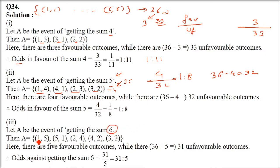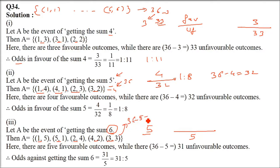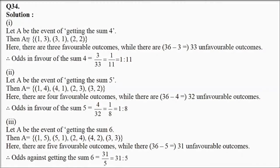For odds against getting sum 6: the combinations (1,5), (5,1), (2,4), (4,2), (3,3) give you 6 — so there are 5 favorable cases. For odds against, the favorable cases go in the denominator. Subtract 5 from 36, that is 31, which goes in the numerator. So 31 by 5 is the answer. The 5 favorable cases are in the denominator and 31 (from 36 minus 5) is in the numerator.